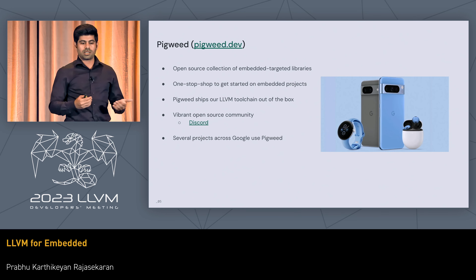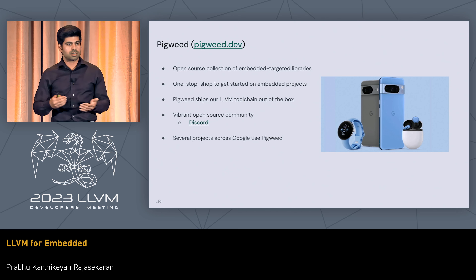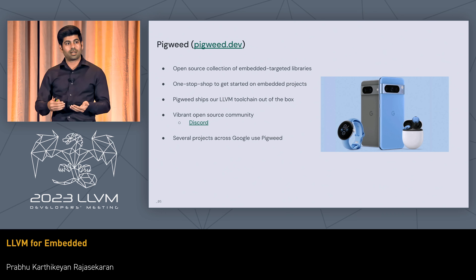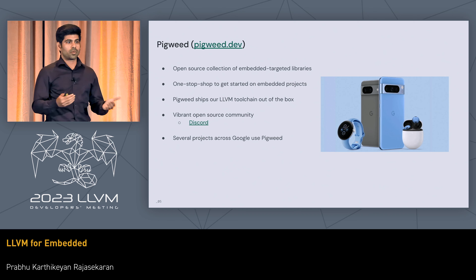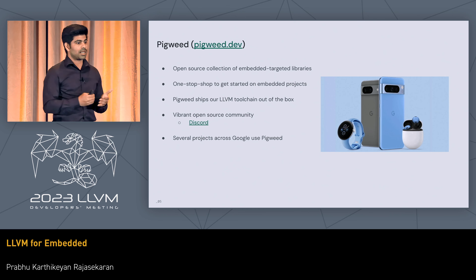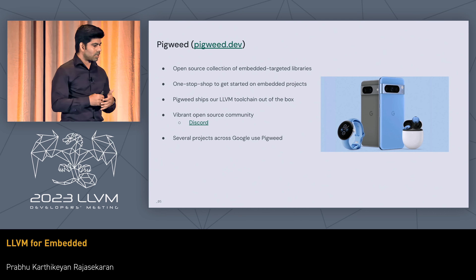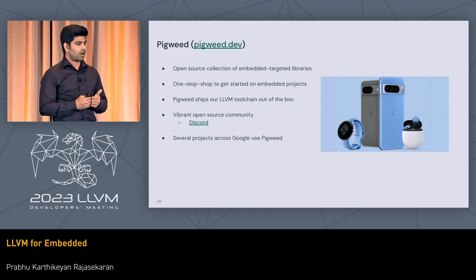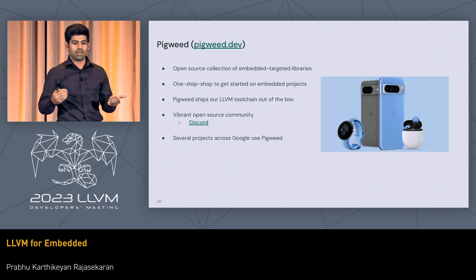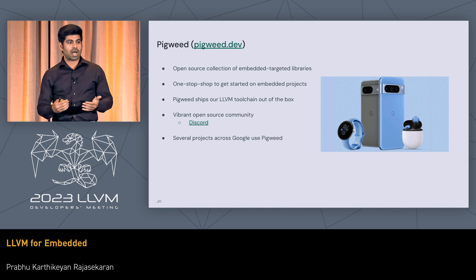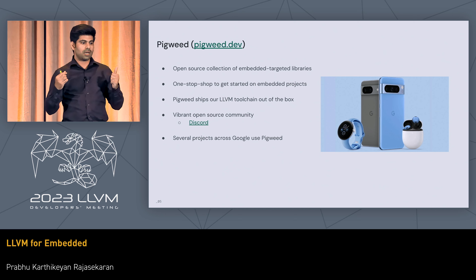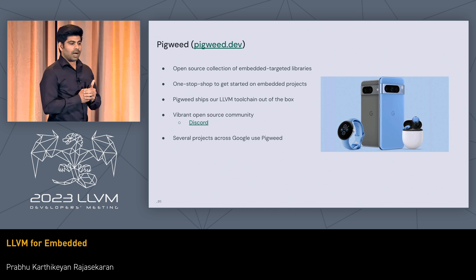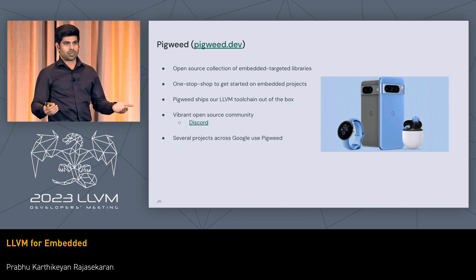In our effort over the last year, Pigweed is one of our partners. Pigweed team is also part of Google. Pigweed maintains an open source collection of embedded targeted libraries. If you want to get started on an embedded project, this is a one-stop shop. Pigweed packages, among other things, lightweight logging, RPC for embedded projects, interesting support for different flavors of C++ like C++17 and C++20. Pigweed is also an open source project, and one more thing it does is ship the LVM toolchain we build out of the box. Several projects within Google, including flagship projects, use Pigweed.